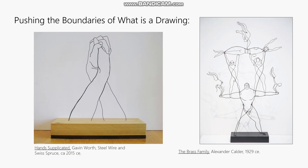Now we're going to talk about some contemporary artists and contemporary interpretations of drawing. The first thing I want you to think about is how artists have expanded the definition of what is a drawing. Fundamentally we think of drawing as a two-dimensional activity, but Calder back in the 20s or 30s made these wire pieces where he was basically making three-dimensional sculptural drawings. They're line-based, and when you look at them from a distance they read like drawings, but they are three-dimensional and have form — the lines move through space. Here's also a contemporary artist, Gavin Wirth, who does works that play up that idea of making a sculpture that reads like a drawing.